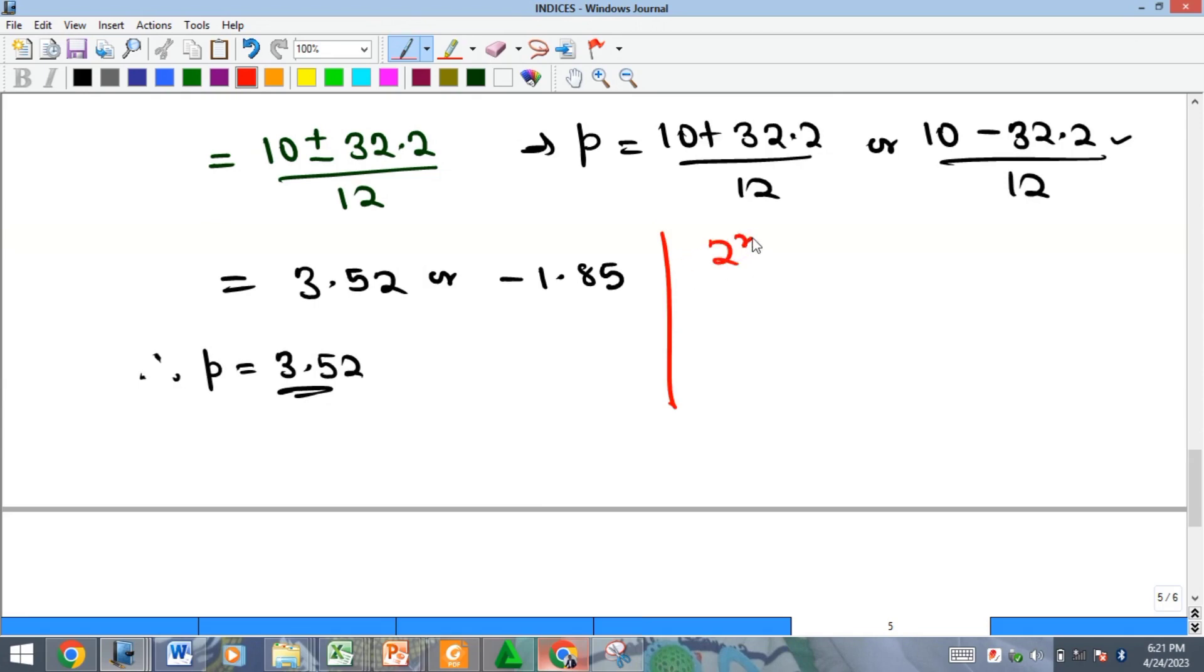How do we then get our x from that equation where we said let 2 raised to power x be equal to p? If we now substitute, we'll have 2 raised power x is equal to 3.52.